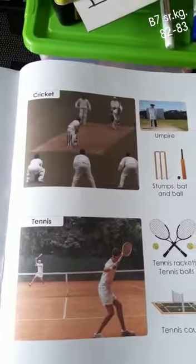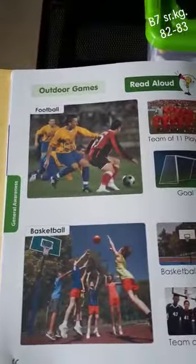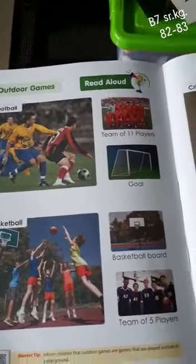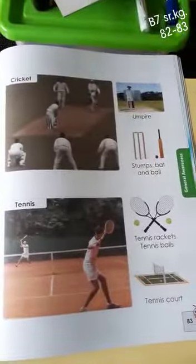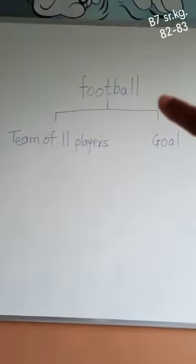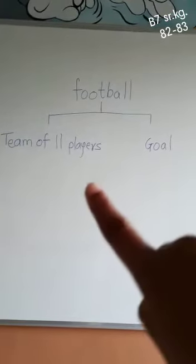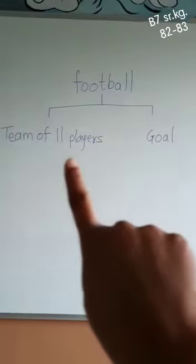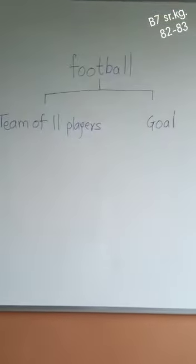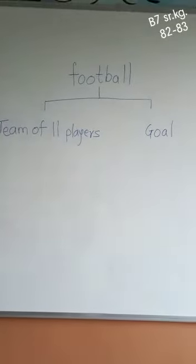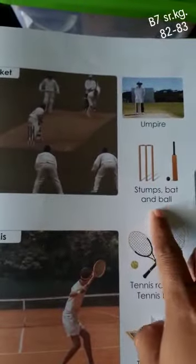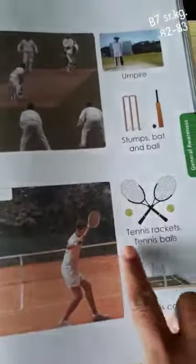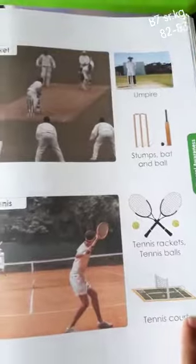Now, the same way I told you last time, you have to write these things — football, basketball, and the equipment or players needed — five times each. Write down the name of the outdoor game and what we need to play it: football needs 11 players and a goal; basketball needs a basketball board and a team of five players; cricket needs an umpire, stumps, bat, and ball; tennis needs tennis rackets, tennis balls, and a tennis court.